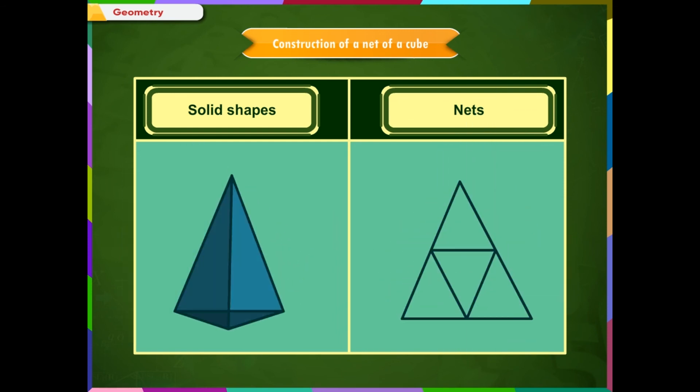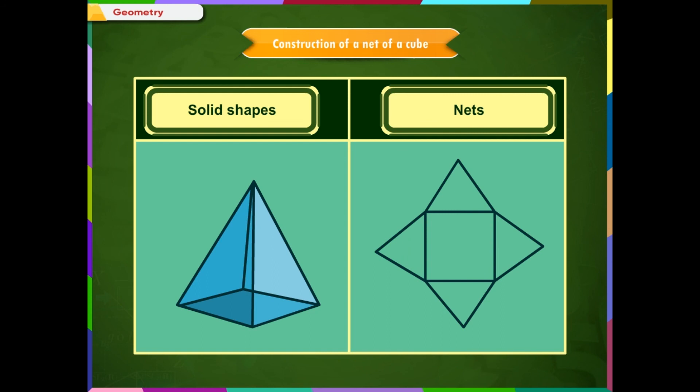Tetrahedron: It has three triangles on its sides and one base triangle. Cut the paper model of this pyramid along one of its sides till the vertex. Flatten it to get the net as shown. Square-based pyramid: It has four triangles as its sides and one base square. Cut the paper model from one of the vertices of the base till the apex. Flatten it to see the net as shown on the screen.